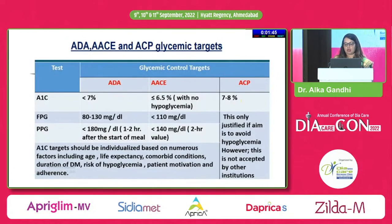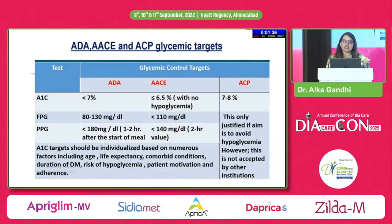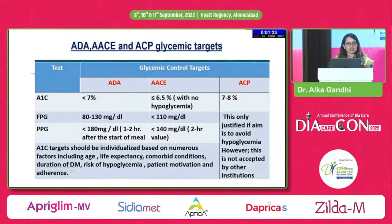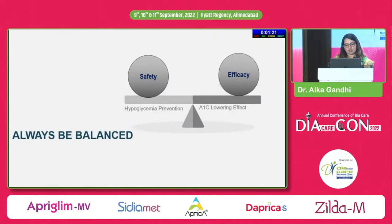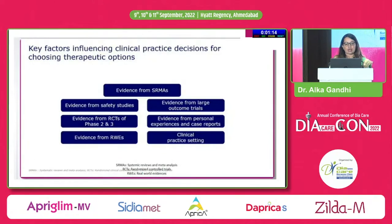Remember: we need to eat early and hit hard. The goal must be individualized. ADA suggests A1C less than 7, ACE suggests less than 6.5. Individualization depends on age, duration of diabetes, life expectancy, comorbid conditions, risk of hypoglycemia, patient motivation and adherence. We need to avoid hypoglycemia and go as low as possible, maintaining balance between safety and A1C effect.